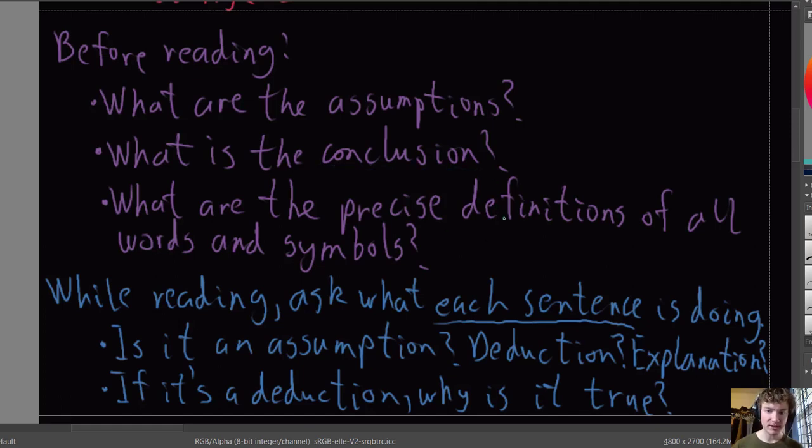So for instance, if the theorem is something about even and odd, you have to ask yourself, can I write down the exact definition of even and odd? So for instance, n is even if n equals 2k for some integer k.